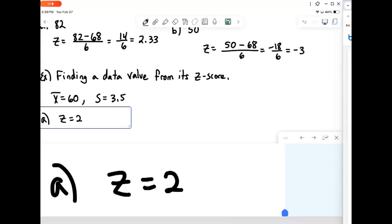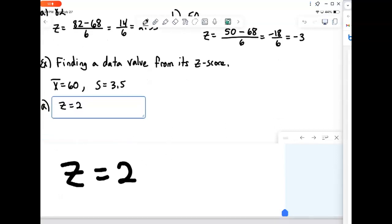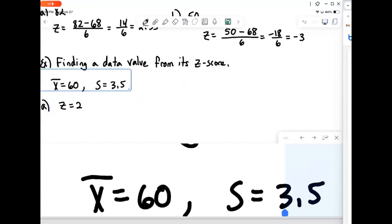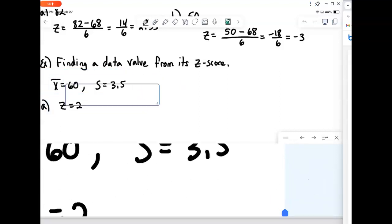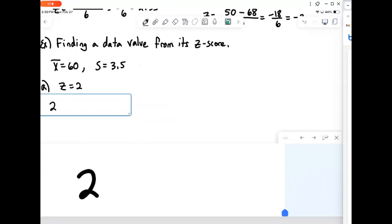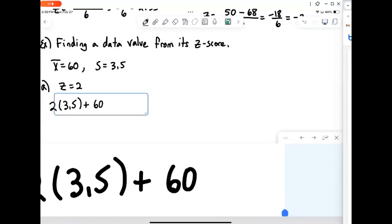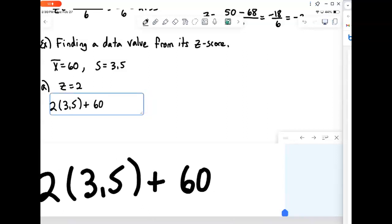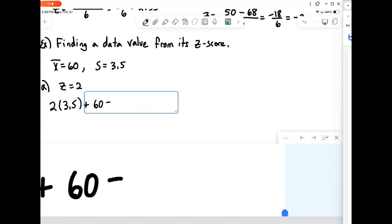So let's say we know we have a z-score of 2. Then that means we are 2 standard deviations above, because it's positive, 2 standard deviations above the mean. So we are 2 times 3.5, above 60. And then we just do that computation. 2 times 3 and a half is 7. 7 plus 60 would give us 67.